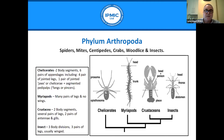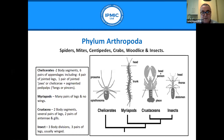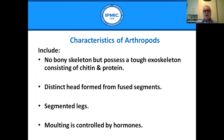Insects come from the group Arthropoda, which has several divisions. Chelicerates have two body segments, six pairs of appendages, four pairs of jointed legs, chelicerae, and segmented pedipalps. Myriapods have many pairs of legs and no wings. Crustacea have two body segments, several pairs of legs, two pairs of antennae, and gills. Insects have three body divisions with three pairs of legs and are usually winged.